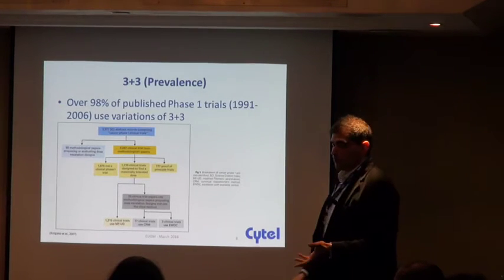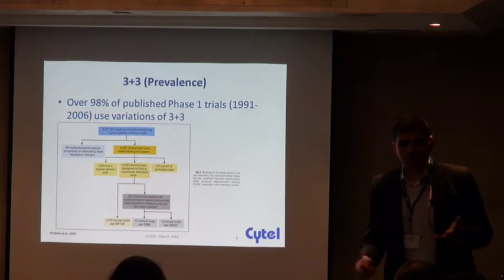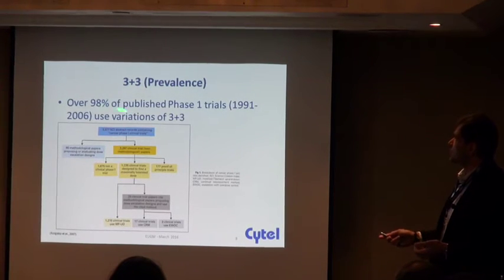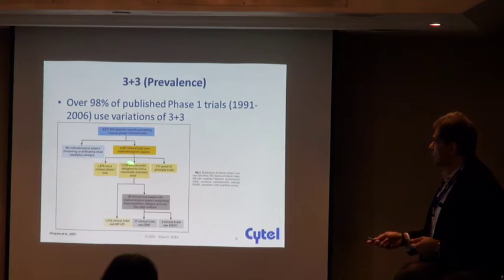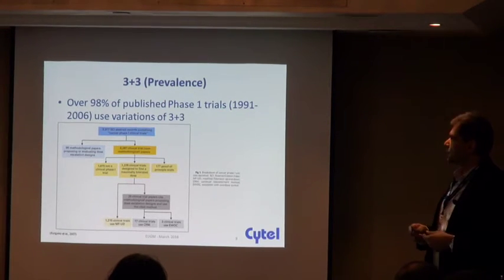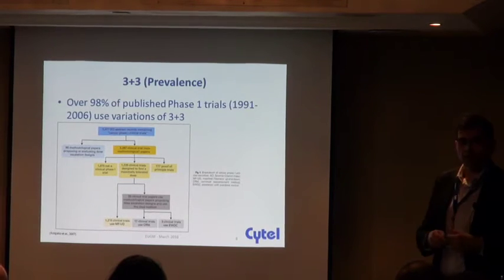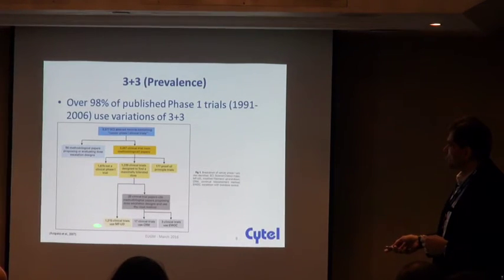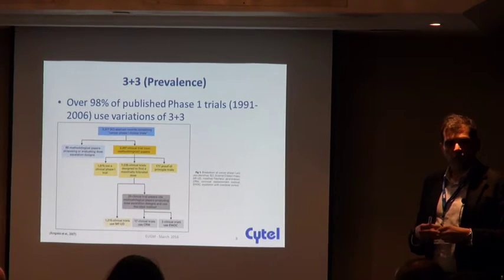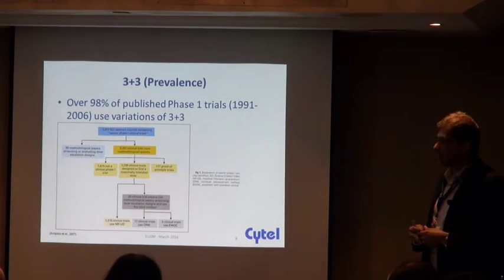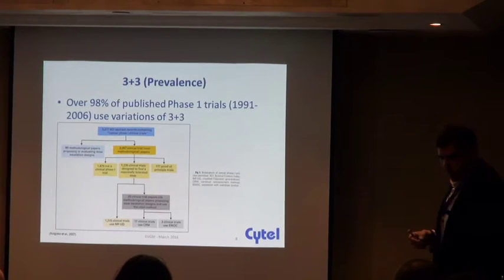I'll quickly mention the 3+3 design because it's the most prevalent one. In a review of 1,235 trials between 1991 and 2006 designed to find a maximum tolerated dose, 1,215 of them used some sort of up-and-down method like a 3+3 design — over 98% of trials used that approach. This trend continued in another review a couple of years later.